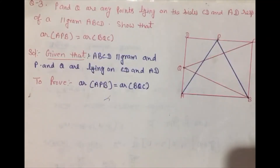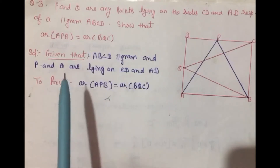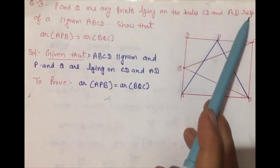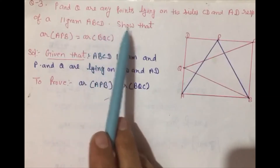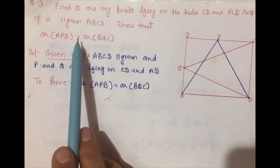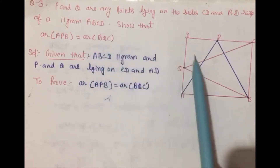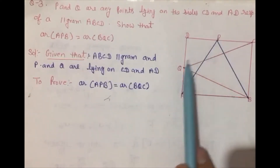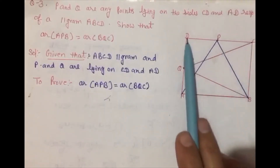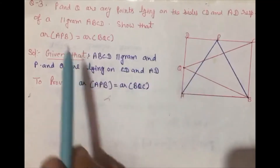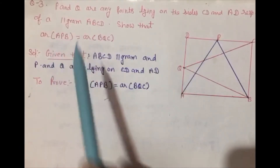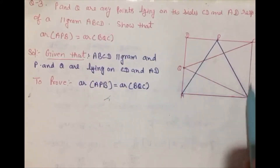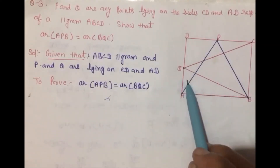Exercise 9.2, Class 9, Question number 3 - P and Q are any points lying on sides CD and AD respectively of a parallelogram ABCD. हमारे पास एक parallelogram है ABCD, P point है CD पे और Q point है AD पे। हमें A और P को join करना है, और Q को C और B से join करना है, और दो triangles बन जाएंगी।